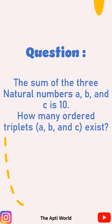Question of the day. The sum of the three natural numbers A, B, and C is 10. How many ordered triplets A, B, and C exist?